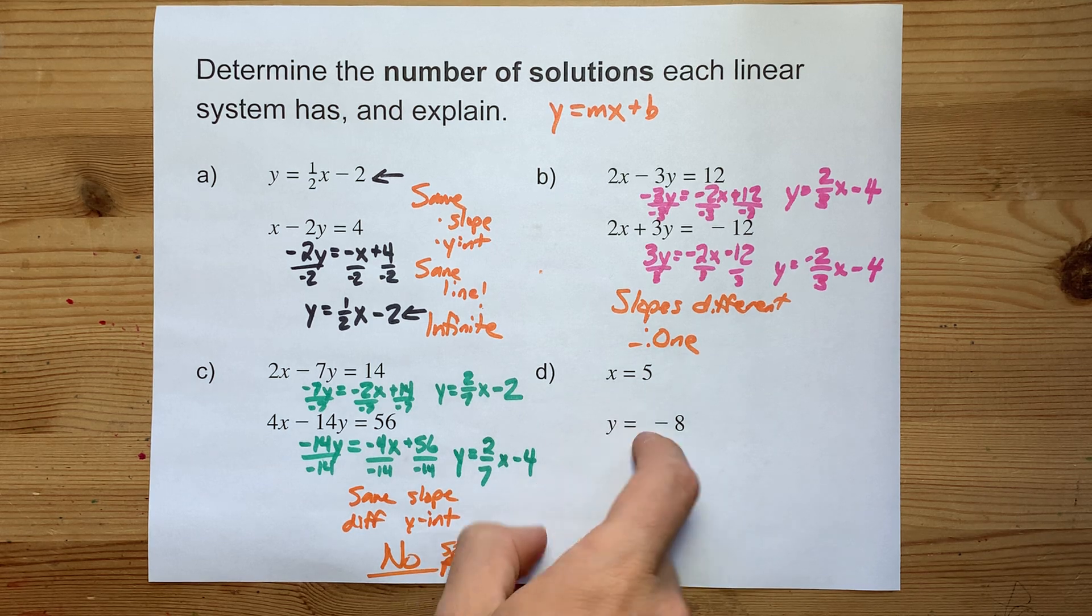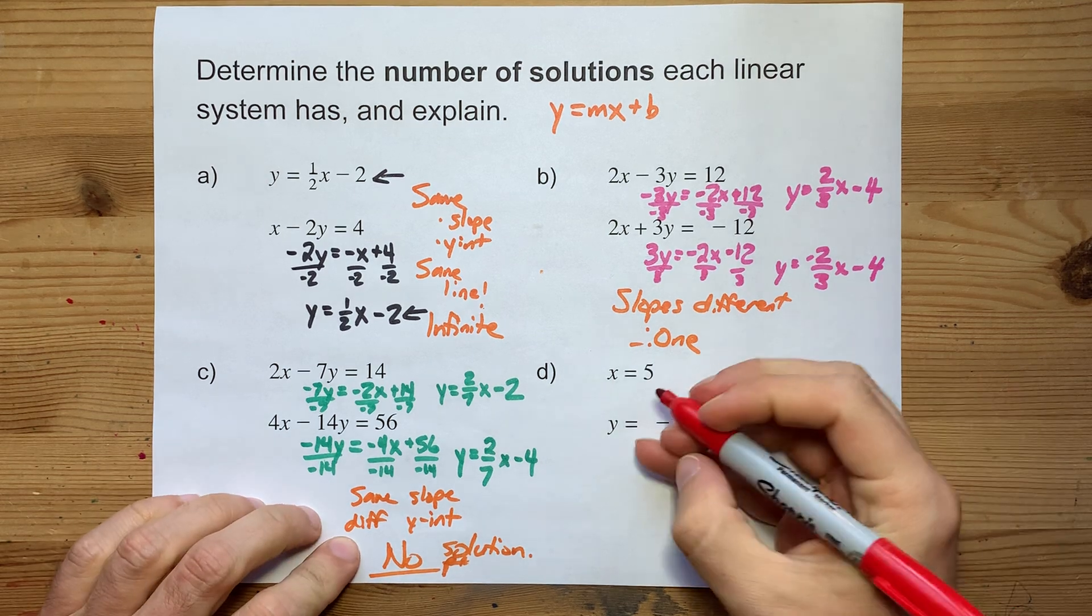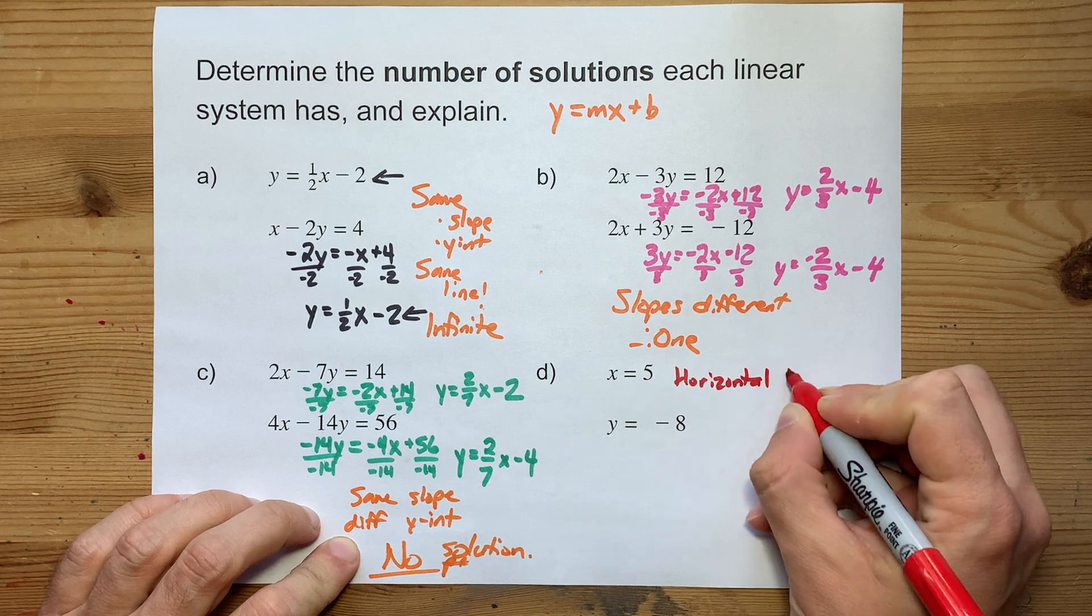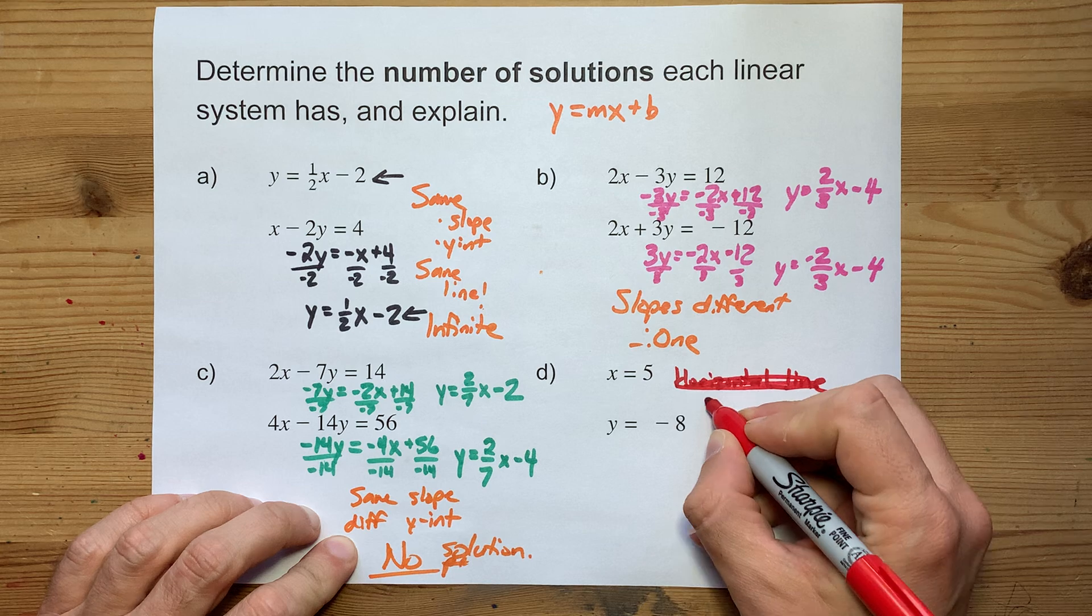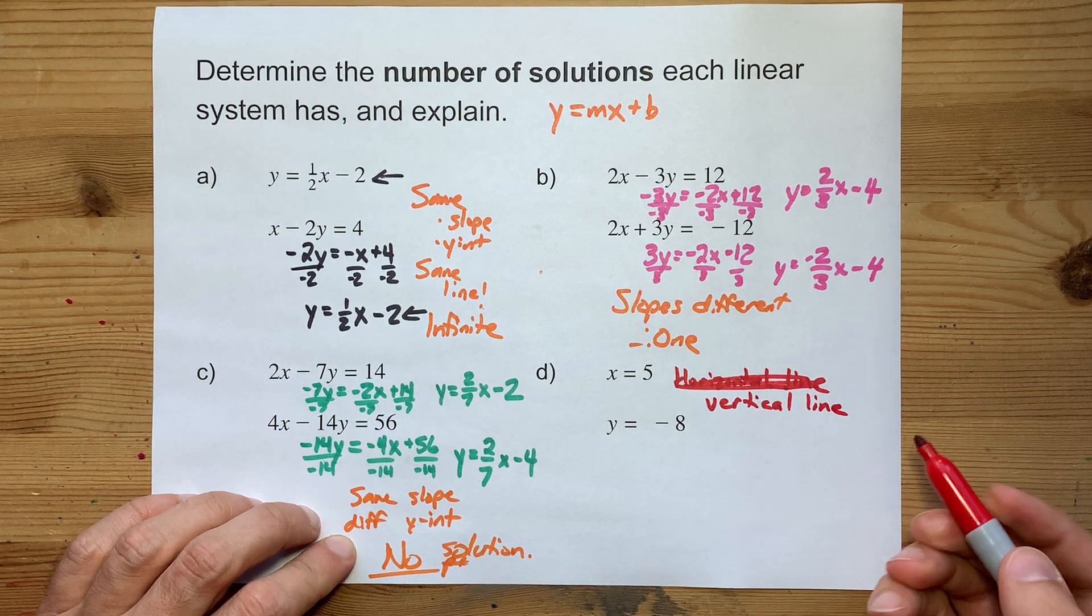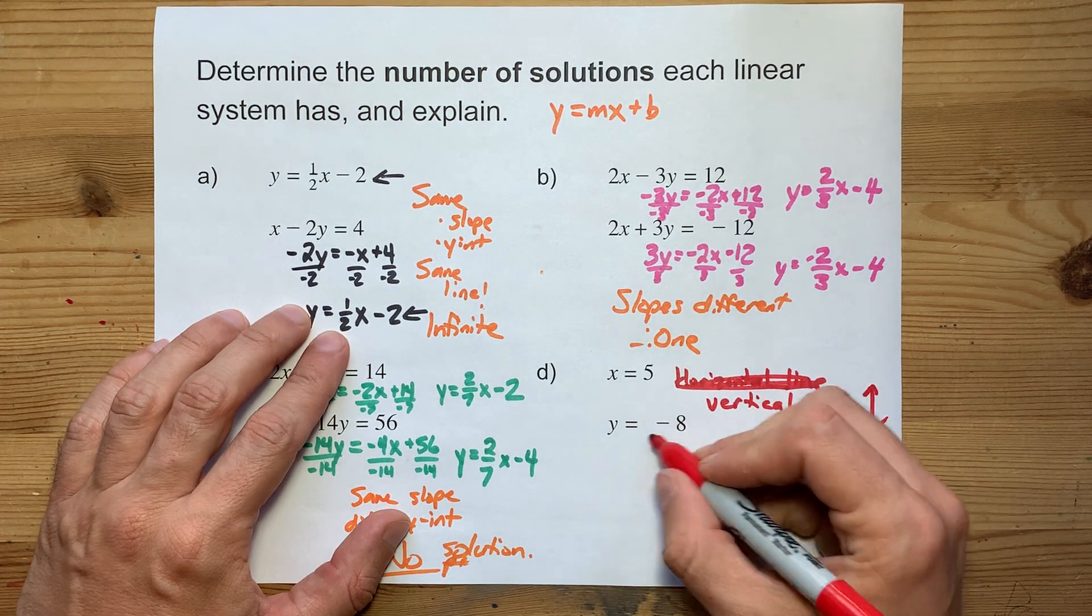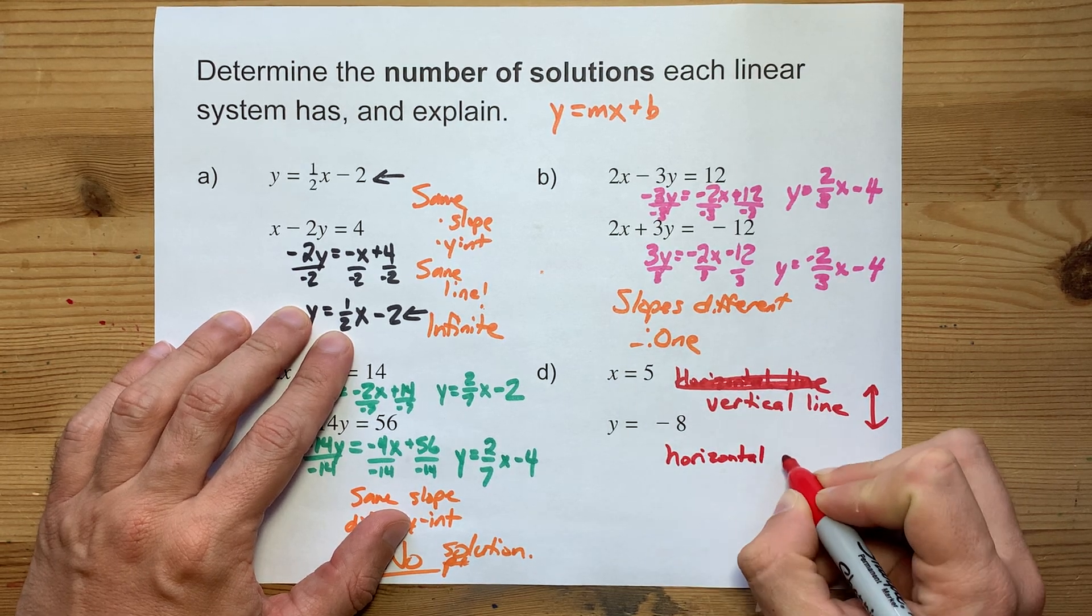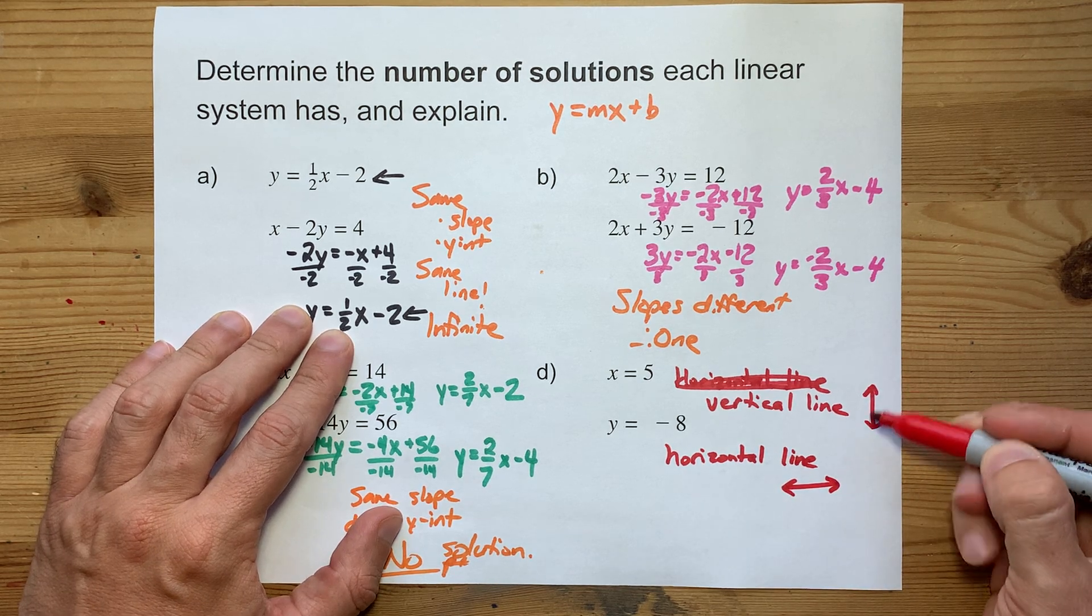And I have included this as a bonus just in case you come across it. x equals 5 is a horizontal line. It has a slope of 0. No, wait. x equals 5 is a vertical line. Can't believe I almost got that backwards. It has an undefined slope, and it goes straight up and down. y equals negative 8 is a horizontal line. It goes straight across and has a slope of 0. The slope here was undefined.